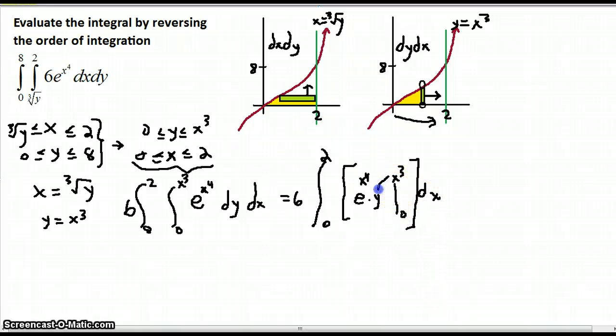So put in the limits of integration for y, not for x, for y. And that just conveniently brings our x cubed down that we need. We have the 6 on the outside.